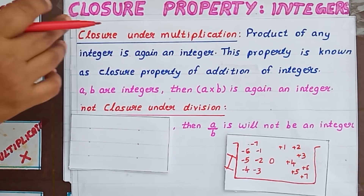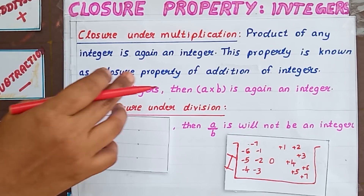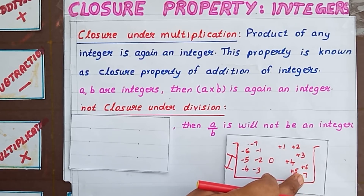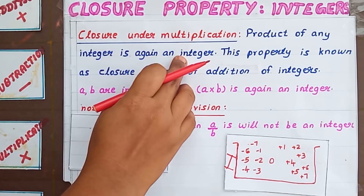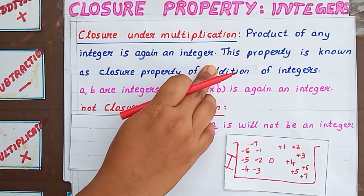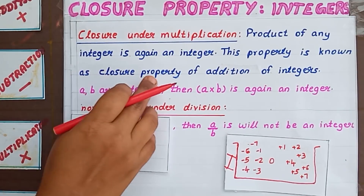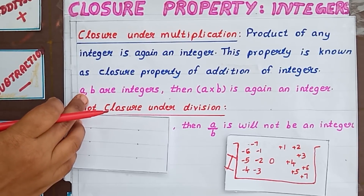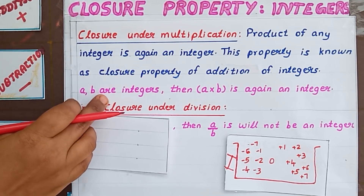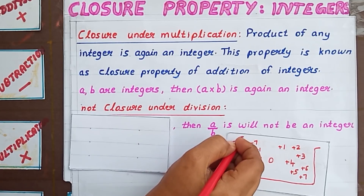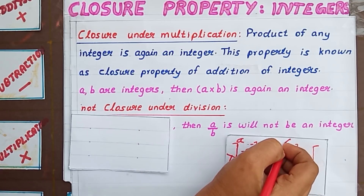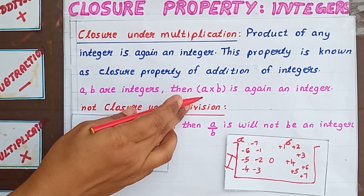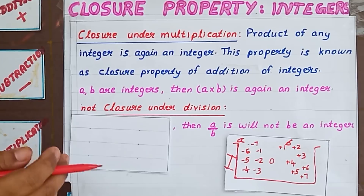The definition for closure under multiplication: the product of any two integers is again an integer. This property is known as closure property of multiplication of integers. If A and B are integers, then the product A × B is again an integer.